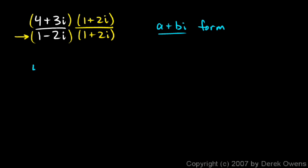The first gives me a 4. And then the outer gives me a plus 8i. And the inner gives me 3i times 1. That gives me a plus 3i.